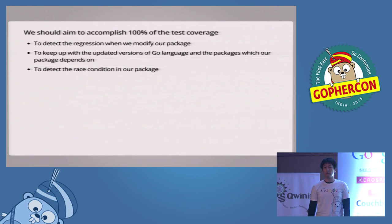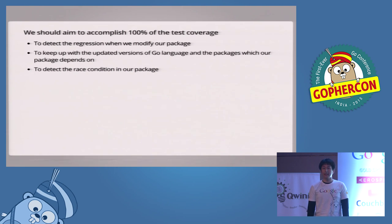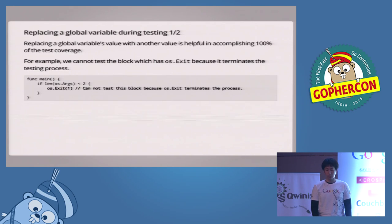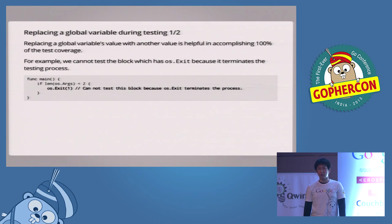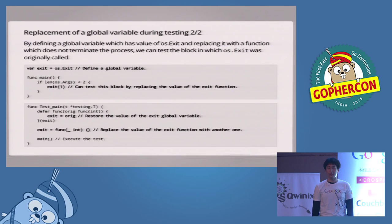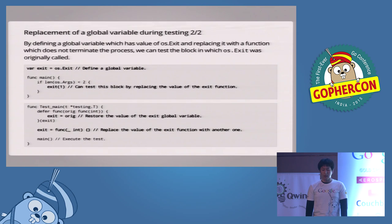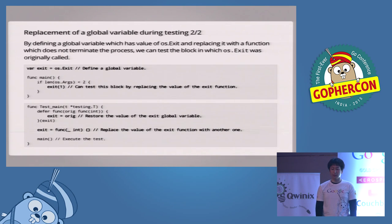Replacing a global variable's value with another value is helpful in accomplishing 100% test coverage. We cannot test a functional block which calls the os.Exit function because this function terminates the testing process. We can test this code by using a global variable. First, we define a global variable which has the value of the os.Exit function, and call this global variable in the main function. The exit global variable is defined and has the value of os.Exit, and it's called in the main function. Then in the testing code, we assign another function which does nothing to the global variable before the testing. By doing this, we can test the whole main function.